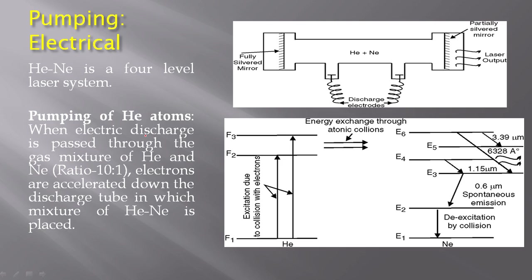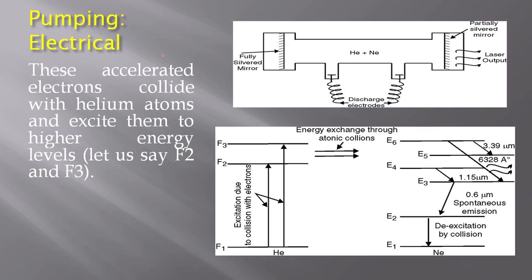When electric discharge is passed through the gas mixture of Helium and Neon — in the ratio of 10 to 1 — electrons are accelerated down the discharge tube in which the mixture of Helium and Neon is placed. So electrons are excited in this discharge tube. In the energy level diagram it is shown: excitation of Helium atoms occurs with the help of the pumping source, that is the discharge electrodes. These accelerated electrons collide with Helium atoms and excite them to higher energy levels.